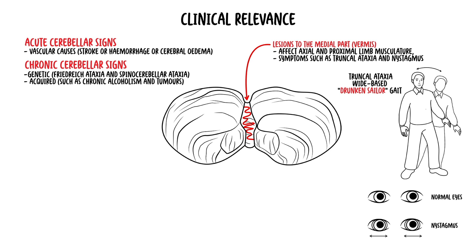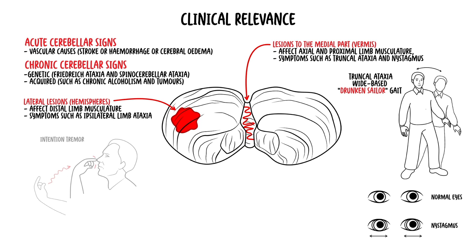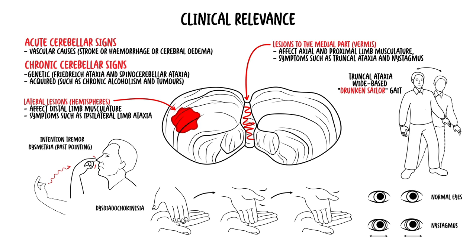On the other hand, lateral lesions of the cerebellum, such as the hemispheres, affect distal limb musculature, which results in symptoms such as ipsilateral limb ataxia, which manifests as intention tremor, dysmetria, past-pointing when performing the finger-to-nose test, and dysdiadochokinesia.